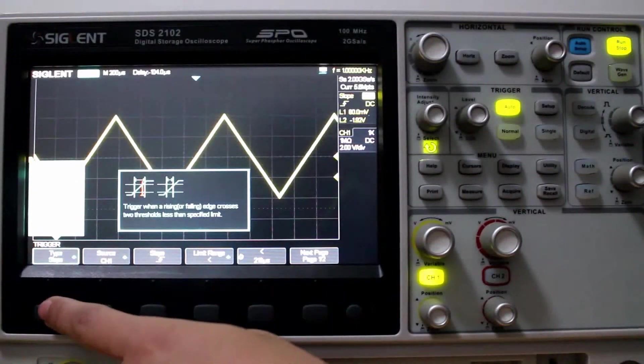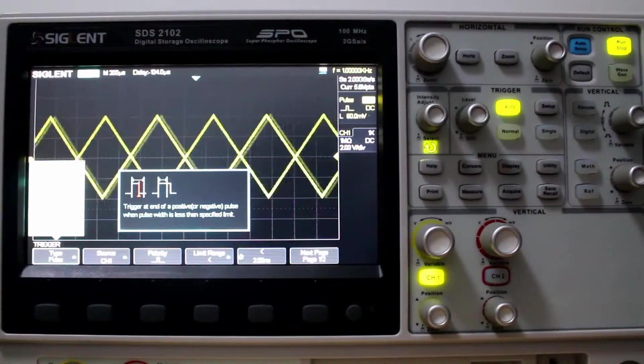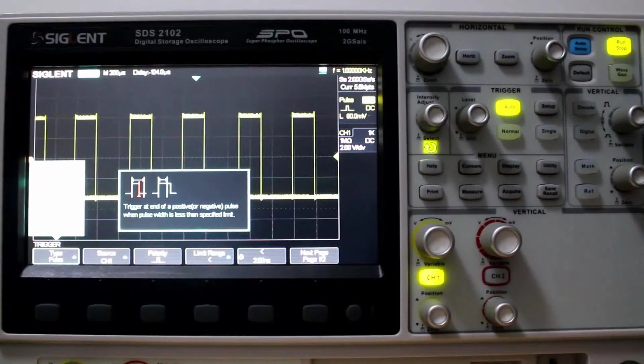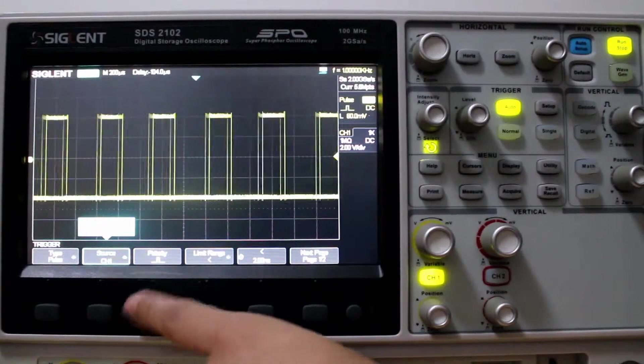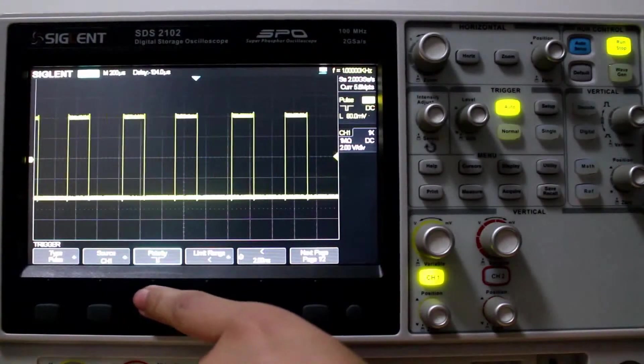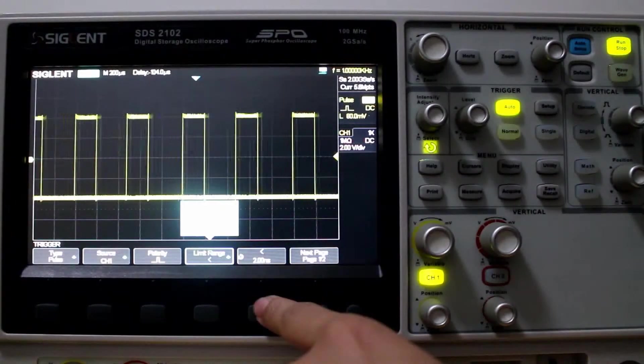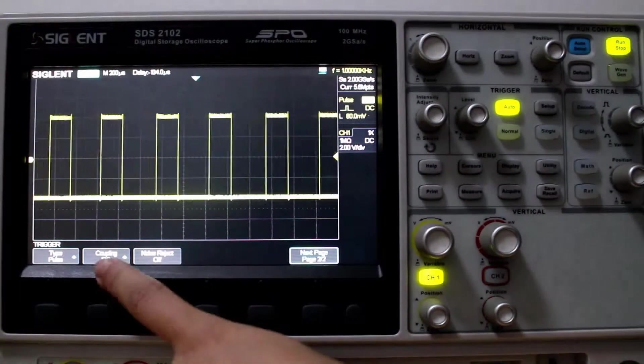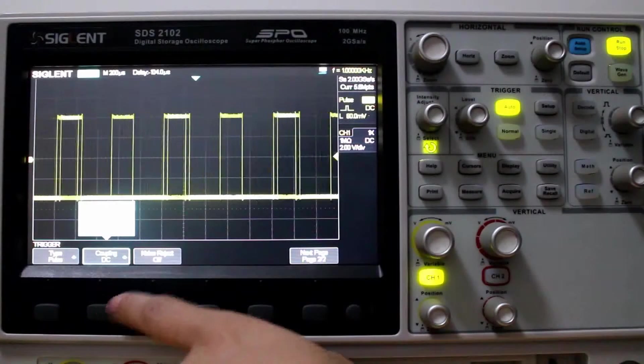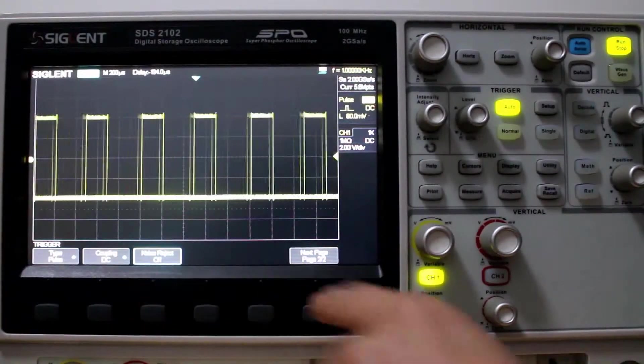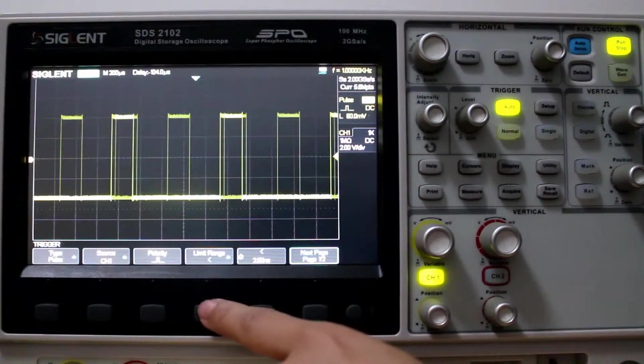Let's change that to pulse. And I'll change the output here to a pulse wave. So we can measure that. Channel 1. Good. Polarity. Positive and negative. Let's set it to positive. Limit range. We can go less than.